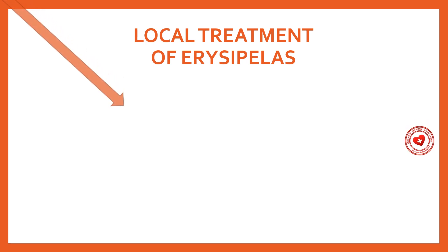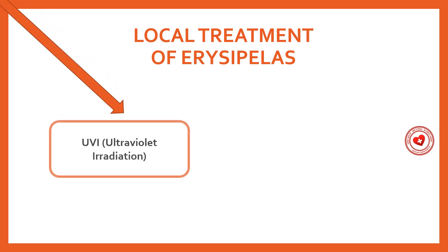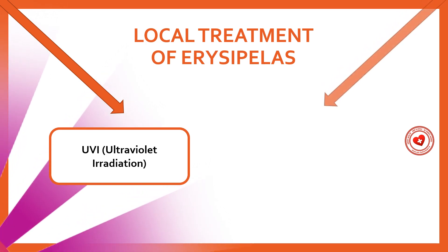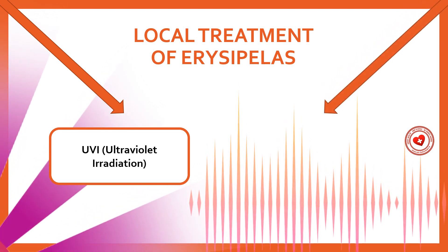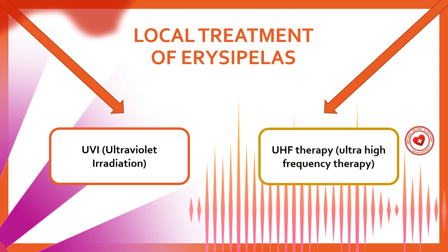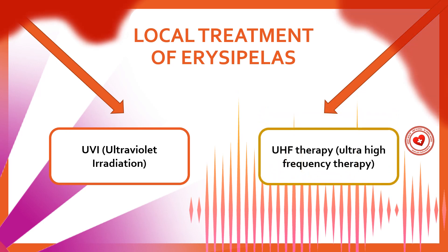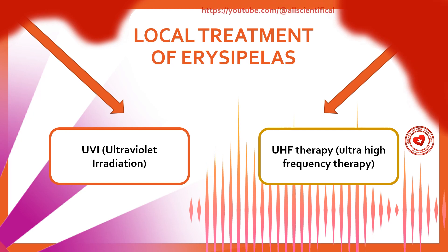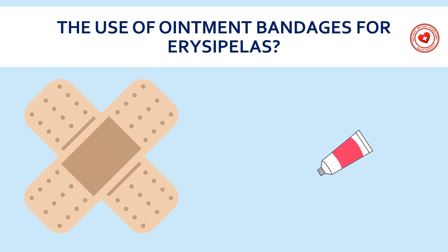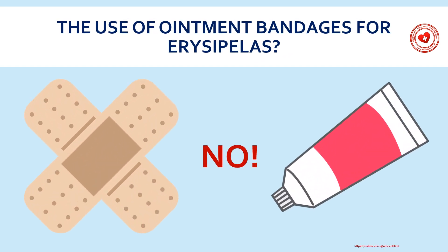Local treatment of erysipelas consists of carrying out ultraviolet irradiation; an erythema dose is given, which is repeated every other day. After the disappearance of acute phenomena and pronounced peeling of the skin with normalization of body temperature, ultra-high-frequency (UHF) therapy is prescribed.